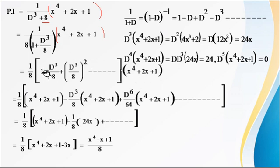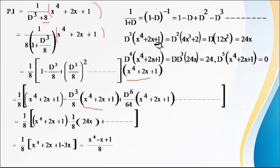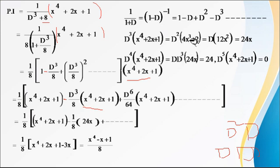Multiplying out: the first term gives 1·(x⁴ + 2x + 1). The next term requires D³/8 applied to (x⁴ + 2x + 1). Computing D³(x⁴ + 2x + 1): first derivative gives 4x³ + 2, second derivative gives 12x², third derivative gives 24x. So D³(x⁴ + 2x + 1) = 24x. Higher terms like D⁶ give 0, so the series terminates here.